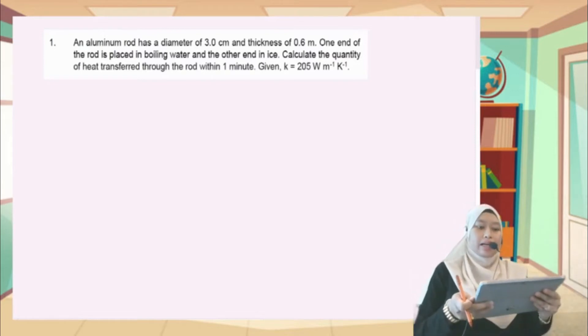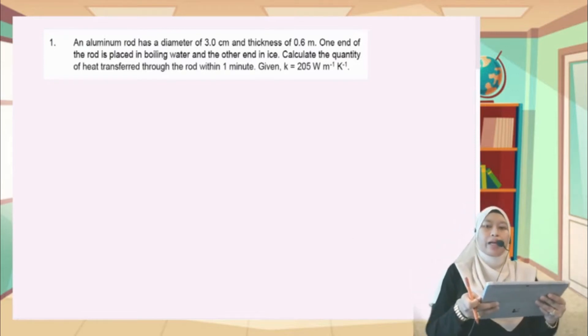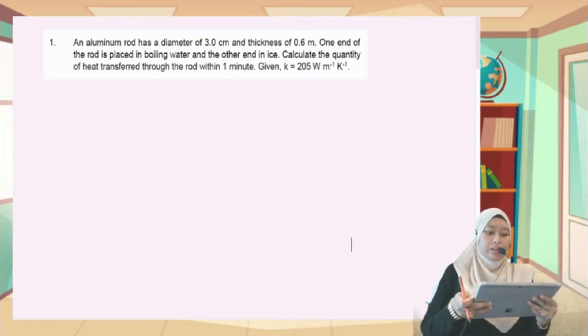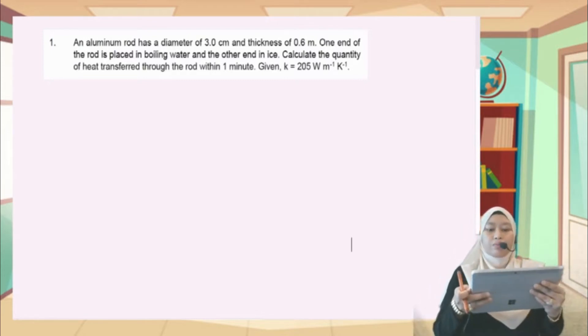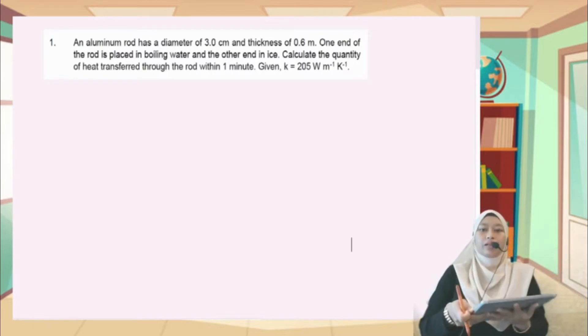An aluminum rod has a diameter of 3 cm and thickness of 0.6 meters. One end of the rod is placed in boiling water and the other end in ice. Calculate the quantity of heat transferred through the rod within 1 minute, given the thermal conductivity is 205 Watt per meter per Kelvin.